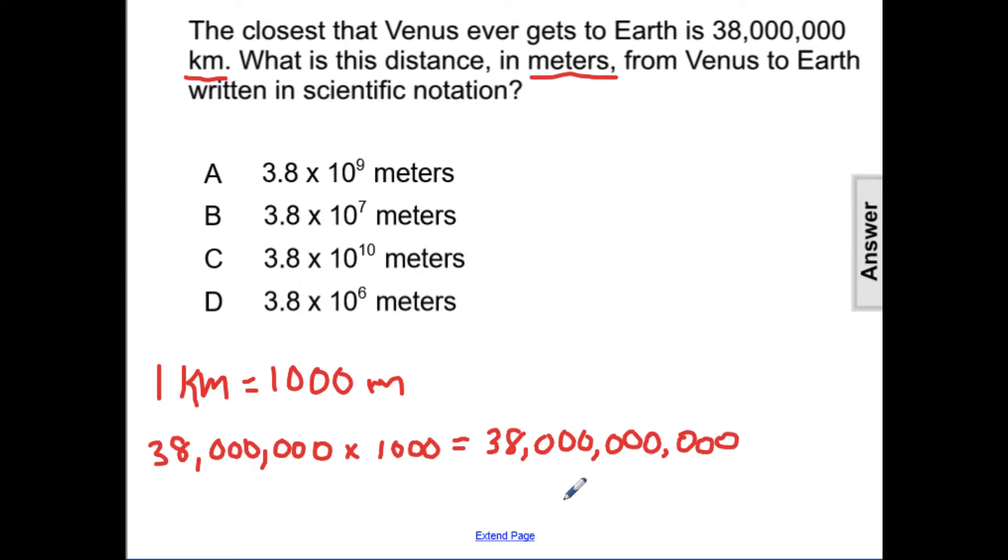This is the number that we're going to have to convert to scientific notation. So first we're going to write the number without the commas as 38,000,000,000.